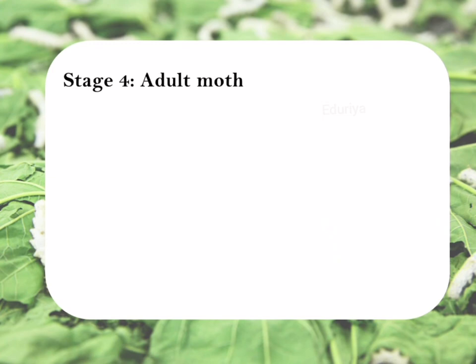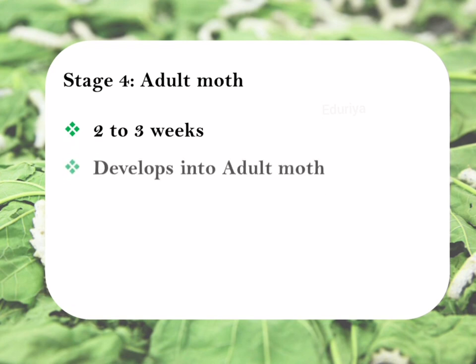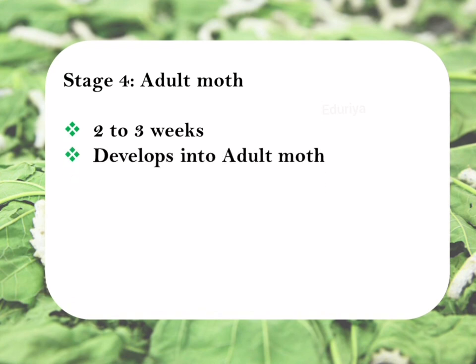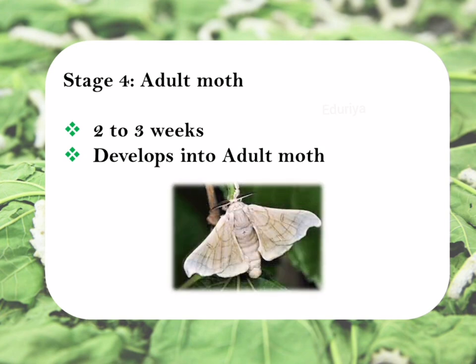Stage 4: Adult moth. After 2 to 3 weeks, the pupa develops into an adult moth. This adult moth again lays 400 eggs and this process continues. This is how the life cycle of a silk moth completes.